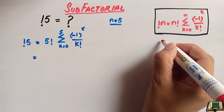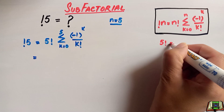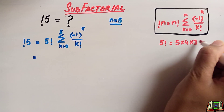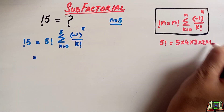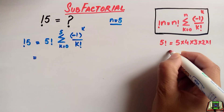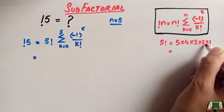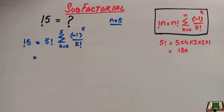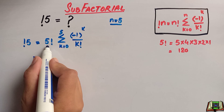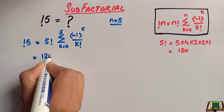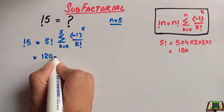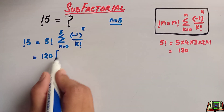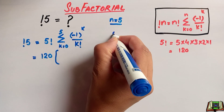5 factorial equals 5 times 4 times 3 times 2 times 1, which equals 120. So 5 factorial is equal to 120, and here k goes from 0 to 5.